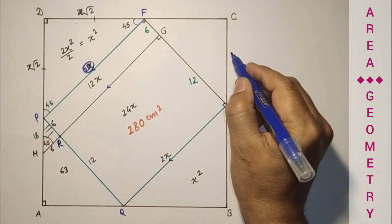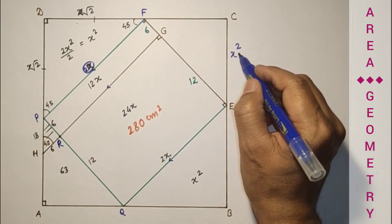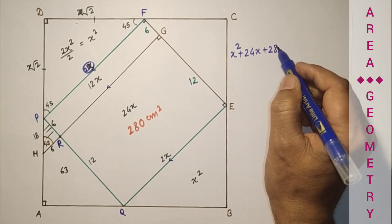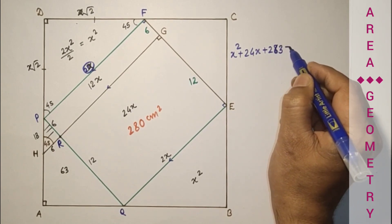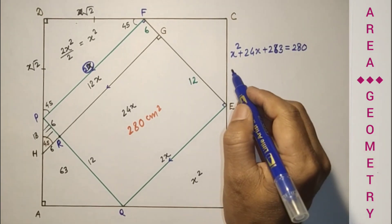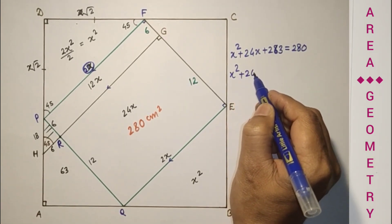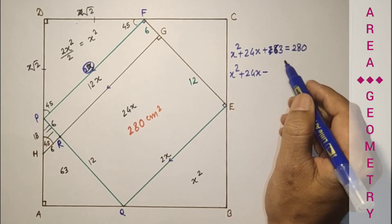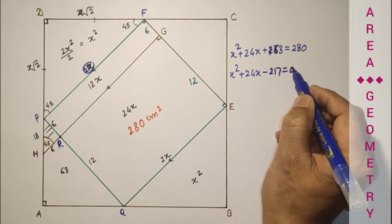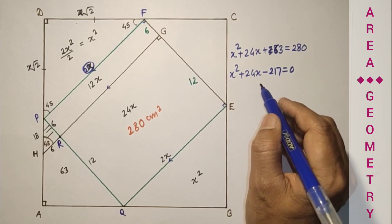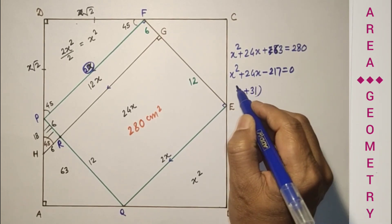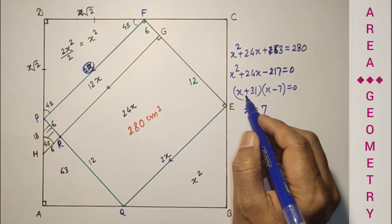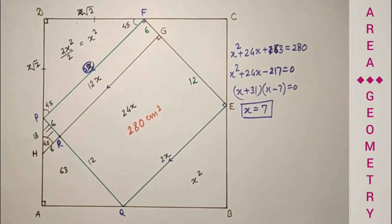So we will have X square plus 4X plus 12X plus 63, that is equal to 280. If we simplify this, X square plus 24X minus 217 is zero. After factorization we will get X plus 31 into X minus 7. This is impossible, so X equals 7.